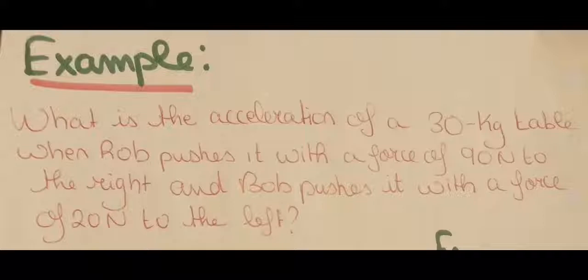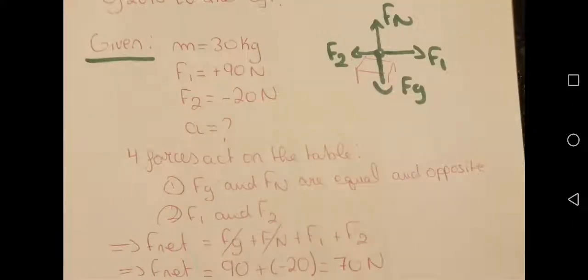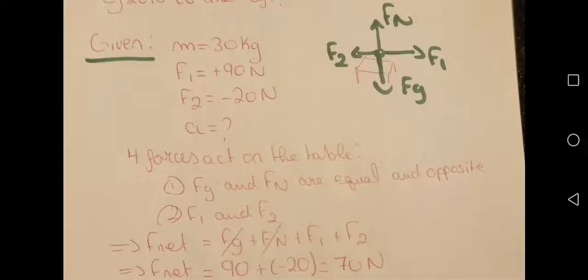For example: what is the acceleration of a 30 kilogram table when Rob pushes it with a force of 90 newtons to the right and Bob pushes it with a force of 20 newtons to the left? The given is: mass = 30 kg; F1 = 90 N (positive, to the right); F2 = 20 N (negative, to the left). The unknown is acceleration. As we can see in the image, the table has four forces: the gravitational force pulling it downwards, the normal force from the ground pushing it upwards, F1 to the right, and F2 to the left.